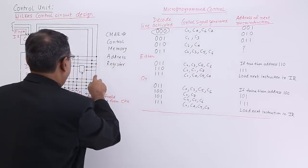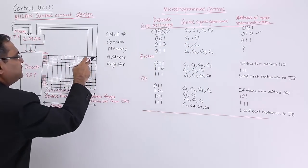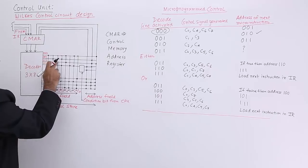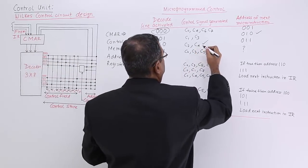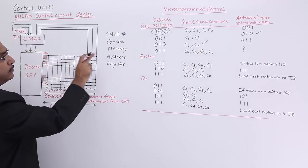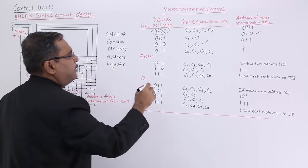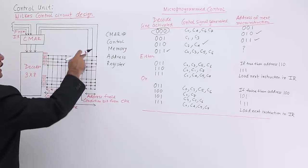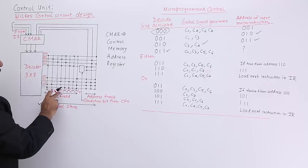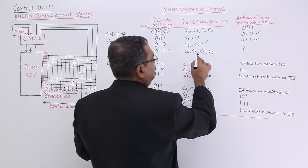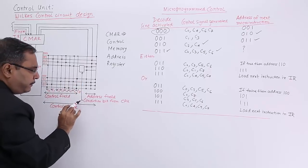Return address 0 1 0 will produce the control signals C2 and C4. The return address is then 0 1 1. So 0 1 1 will come down here — it will produce the control signals C0, C3, C5, and C6. Here there is a box guided by the condition bit from the CPU. Sometimes we have jump-zero, jump-not-zero, jump-carry, jump-not-carry. The condition bit will be coming from the CPU and will decide what is the next micro instruction to be carried out.